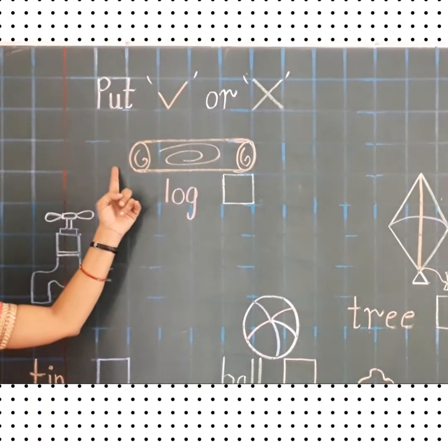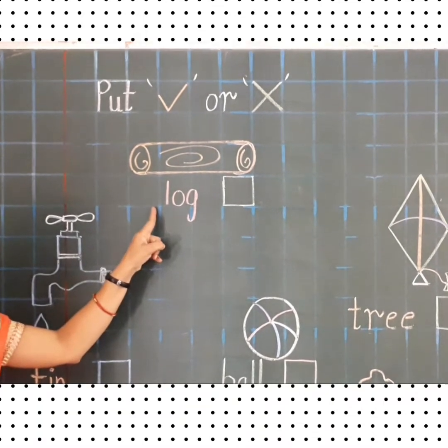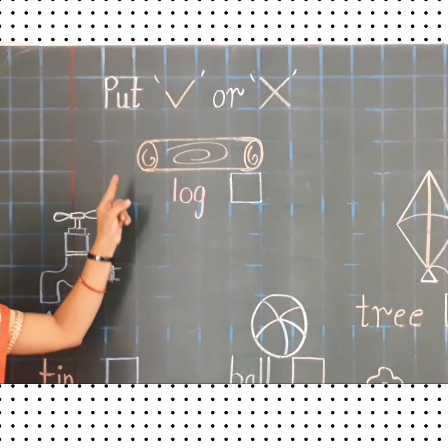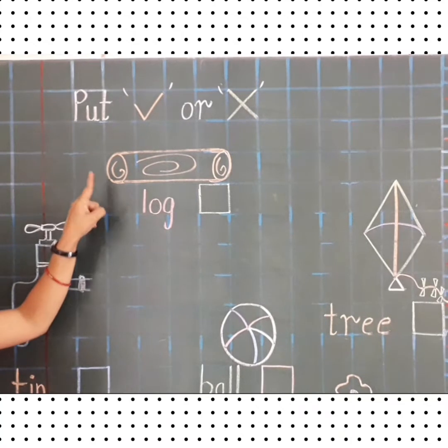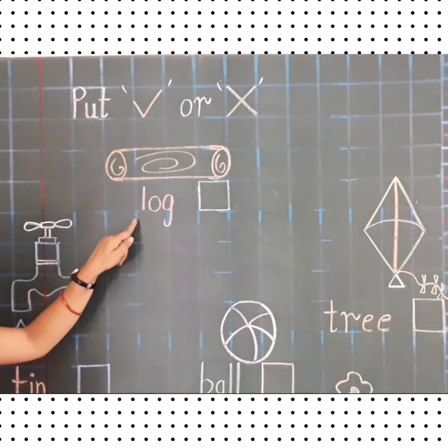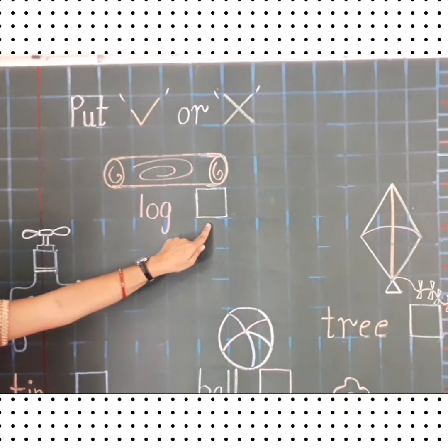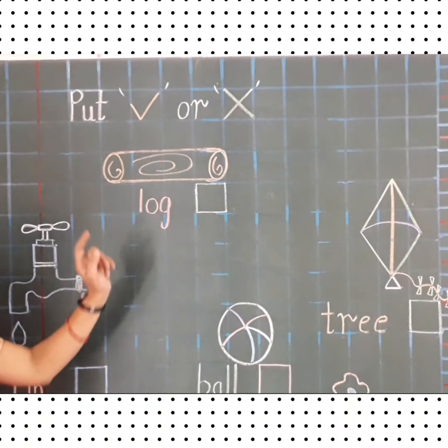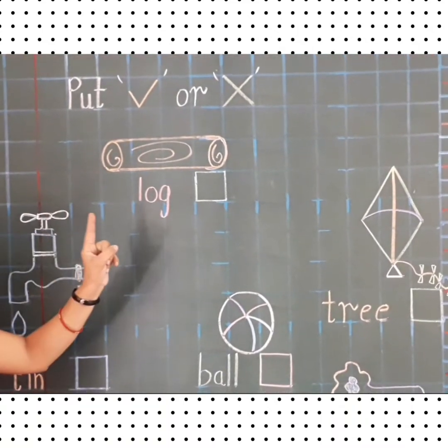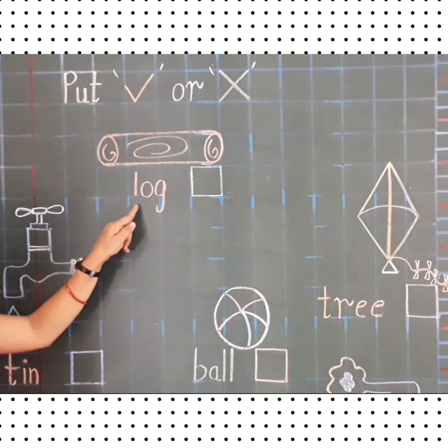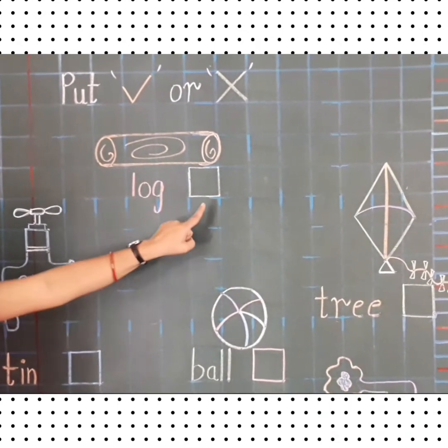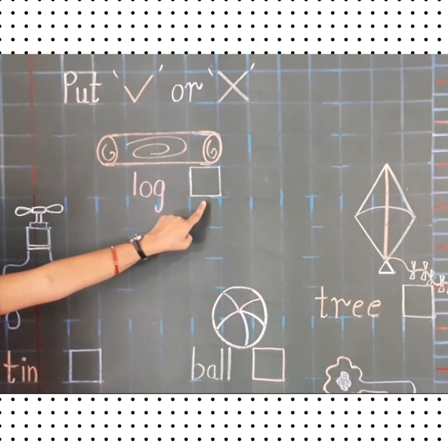See children, here one picture is given and one spelling is given. Now what you have to do? If the picture matches with the spelling, then we will put tick in this box. And if this picture does not match with this spelling, then what we have to do? We will put cross in this box.